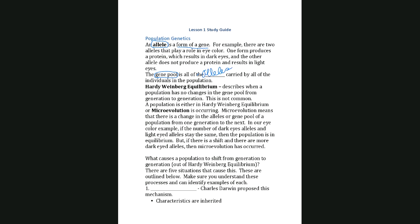The gene pool would be for the entire population — the collection of all the alleles. So if you have a population of a hundred thousand people, if you add up every allele for dark-eyed color and every allele for light-eyed color, that makes up the gene pool. This equation is Hardy-Weinberg equilibrium: p² + 2pq + q².